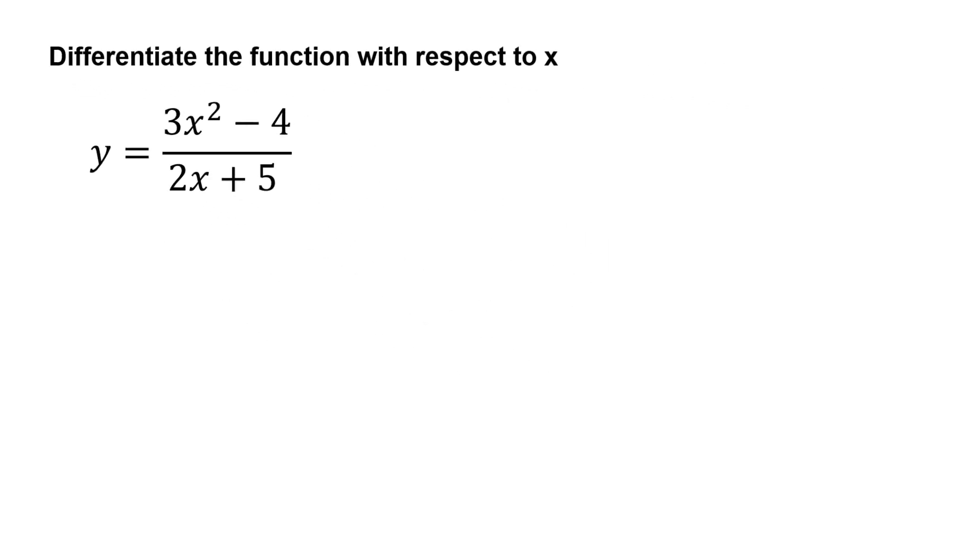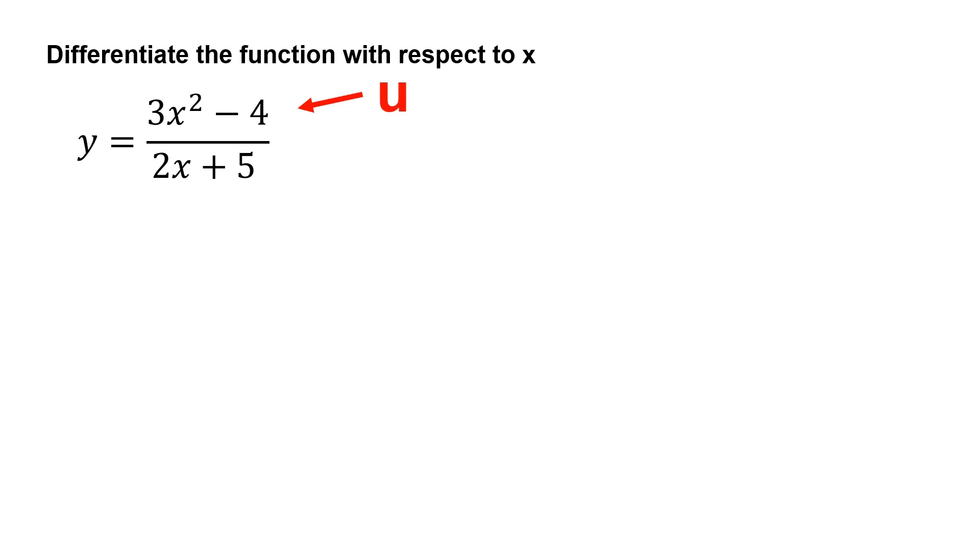To solve this, we let 3x squared minus 4 equals to u, and 2x plus 5 equals to v.